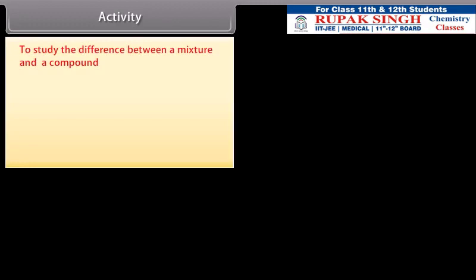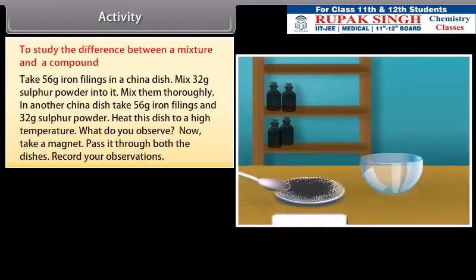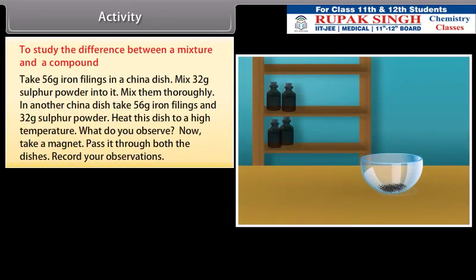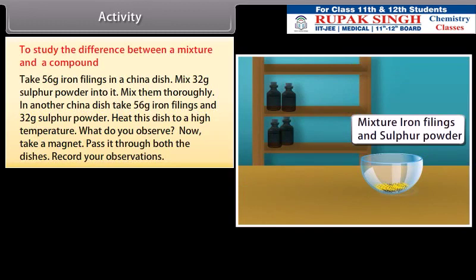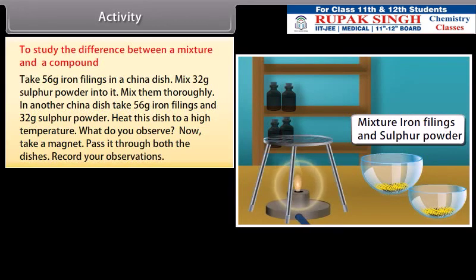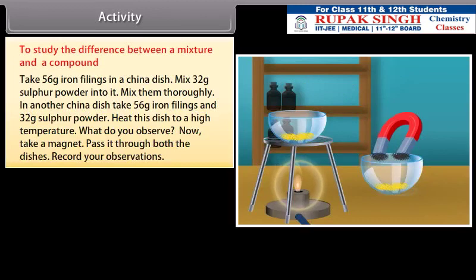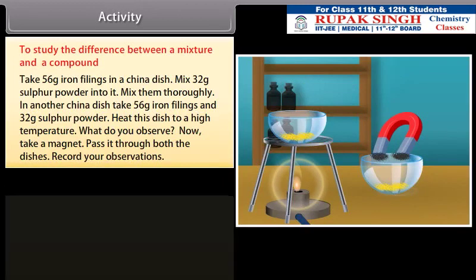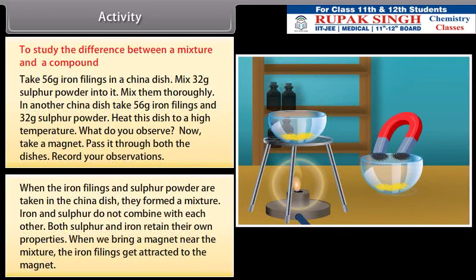To study the difference between a mixture and a compound: take 56 grams of iron fillings in a china dish and mix 32 grams of sulfur powder into it thoroughly. In another china dish, take 56 grams of iron fillings and 32 grams of sulfur powder, then heat this dish to a high temperature. Pass a magnet through both dishes and record your observations. When the iron fillings and sulfur powder are taken in the china dish without heating, they form a mixture — iron and sulfur do not combine with each other, and both retain their own properties. When the magnet is brought near the mixture, the iron fillings get attracted to it.